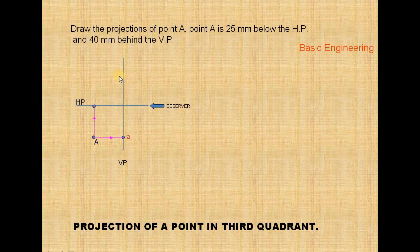We have to rotate the horizontal plane 90 degrees clockwise, like this. We have to rotate the horizontal plane 90 degrees clockwise — you get the top view A.